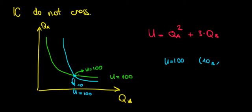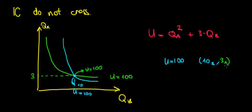For the same utility on the green line, when utility is 100, that point would correspond to a certain quantity of apples. Let's say this quantity of apples is equal to 3 — so 3 kilos of apples on the y-axis.